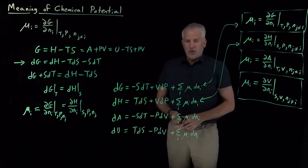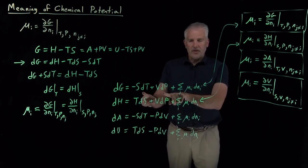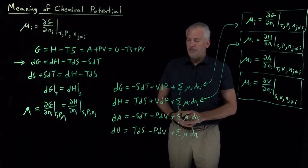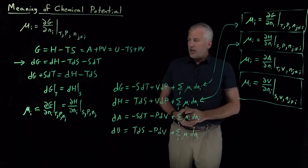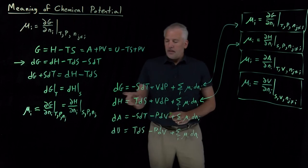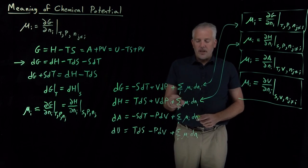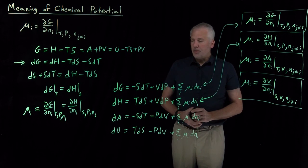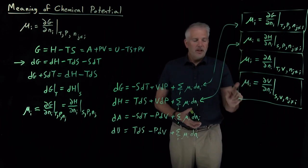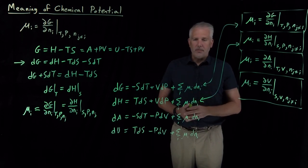Each one of these equations is true, and we're able to use any one or all of them as we wish. Often, which one is most convenient depends on whether temperature and pressure are being held constant, or temperature and volume, and so on. These are not the only examples where a single-component expression gets expanded when we have a multi-component system — many of those multi-component expressions do turn out to involve the chemical potential. The next step is to see how some of our familiar single-component thermodynamic expressions get changed when we're thinking about a multi-component system.